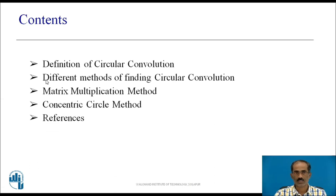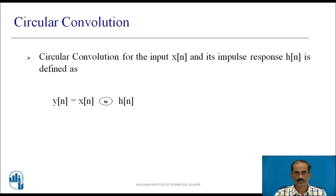These are the contents. We start with the definition of circular convolution, then different methods of finding the circular convolution. Circular convolution for the input x and its impulse response h of n is defined as y of n equal to x of n circularly convolved with h of n.